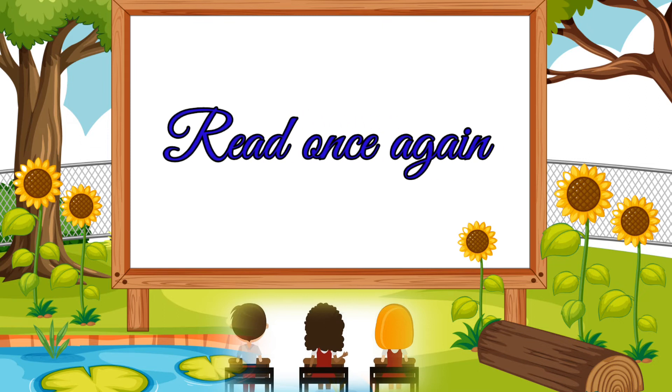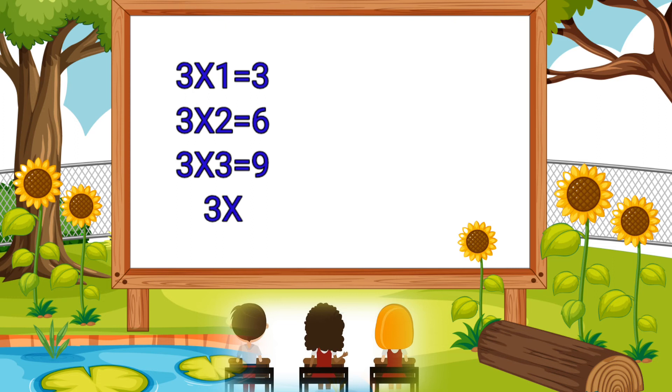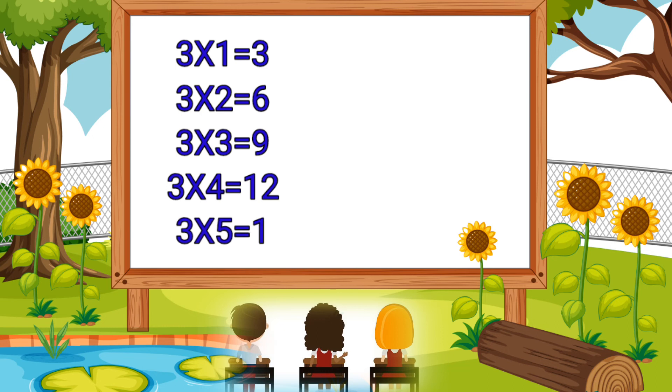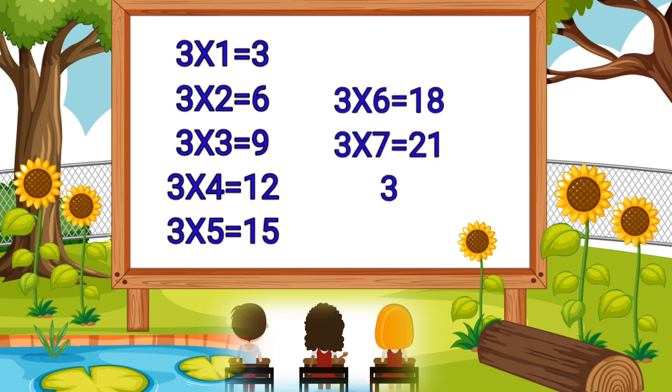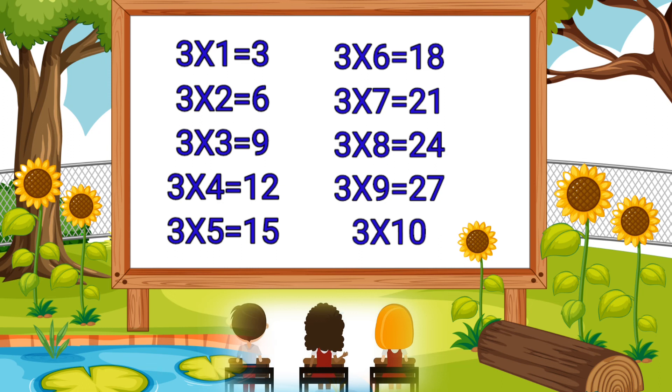Read once again. 3 1's are 3, 3 2's are 6, 3 3's are 9, 3 4's are 12, 3 5's are 15, 3 6's are 18, 3 7's are 21, 3 8's are 24, 3 9's are 27, 3 10's are 30.